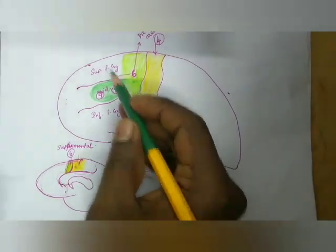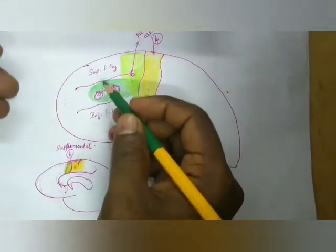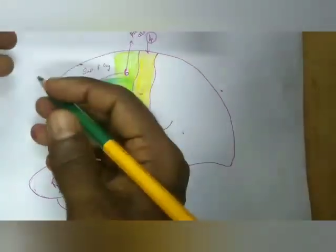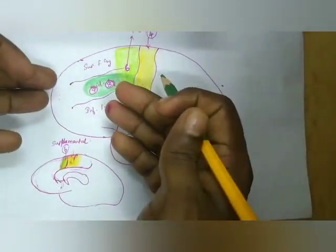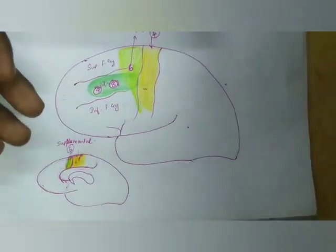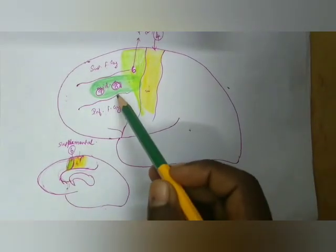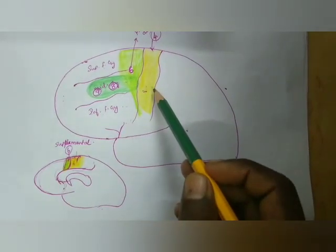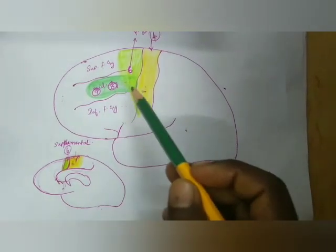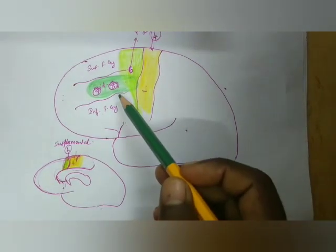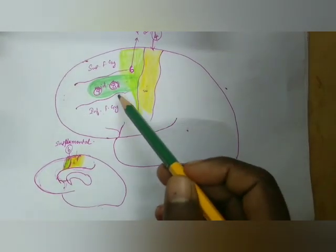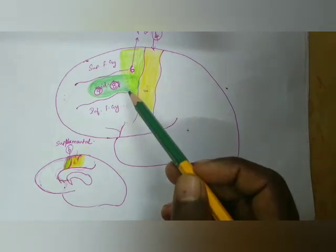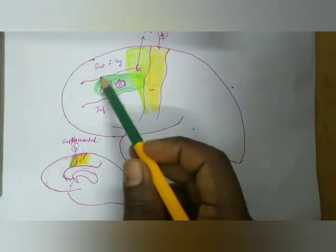If this area is stimulated, it helps the eye move in the opposite direction — a movement called the conjugate eye movement. This movement is also associated with movements of the head and dilatation of the pupil. That is the function of the frontal eye field.